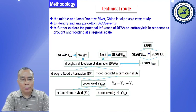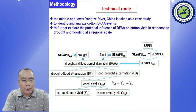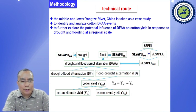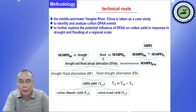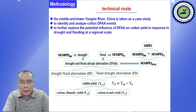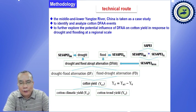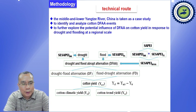Let's see our technical approach. We chose the middle and lower Yangtze River basin as our case study to identify and analyze cotton DFAA events, and then further explore the potential influence of DFAA on cotton yield in response to drought and flooding at the regional scale. We first calculate the index of drought and flood separately, then combine them together to form the drought and flood abrupt alternation index, and then calculate the influence of this index on cotton yield.